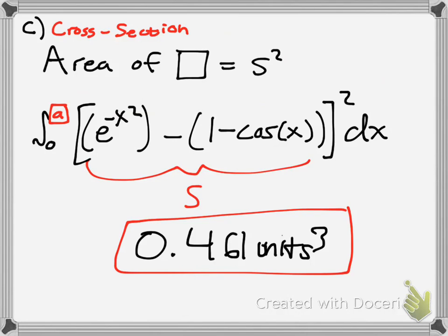For cross-sections in general: when you're given a shape — triangle, square, whatever — know the area formula for that shape. Then go back to the graph, figure out the length of a side, base, or height using the curves, plug into the formula, and integrate.